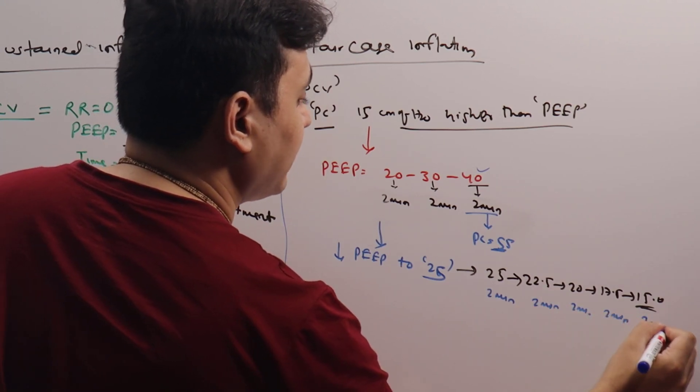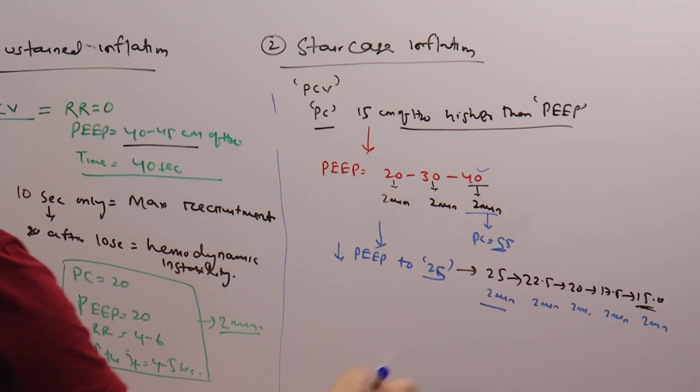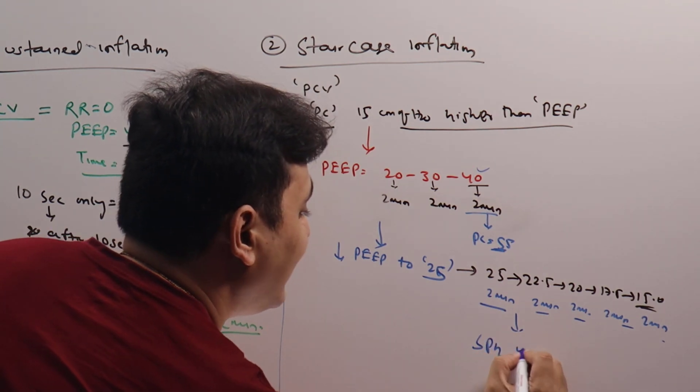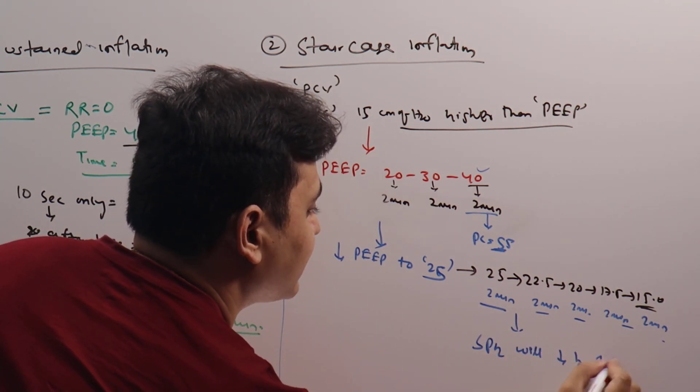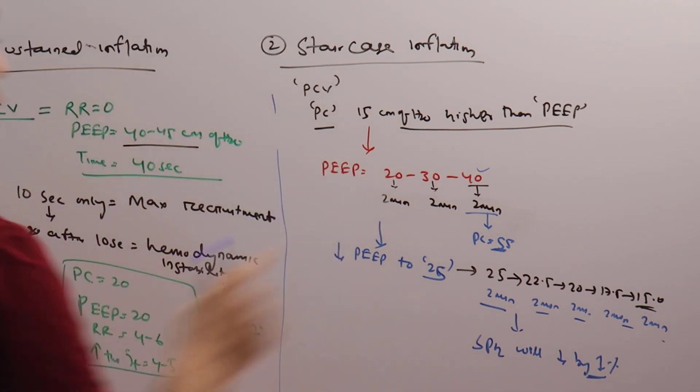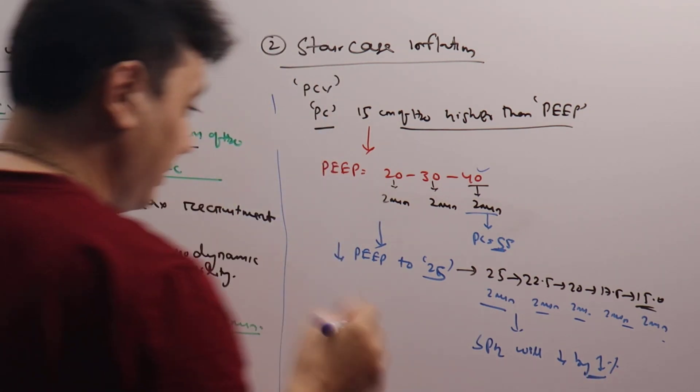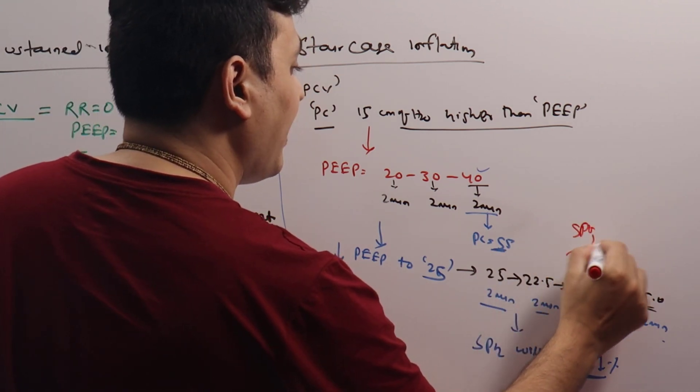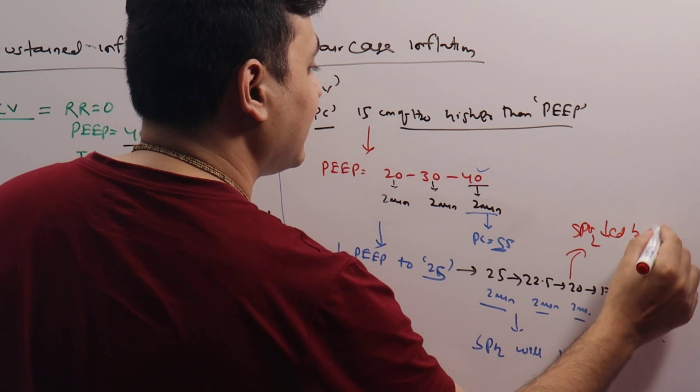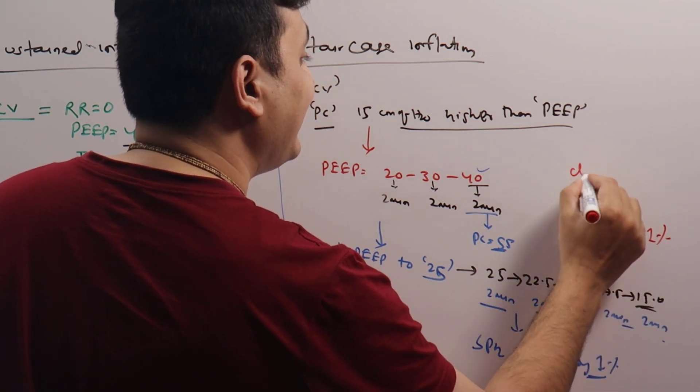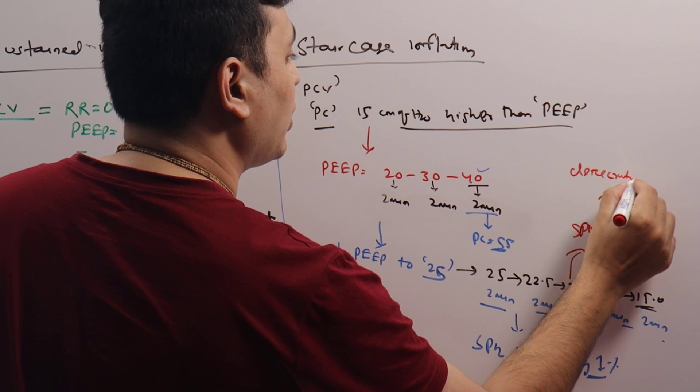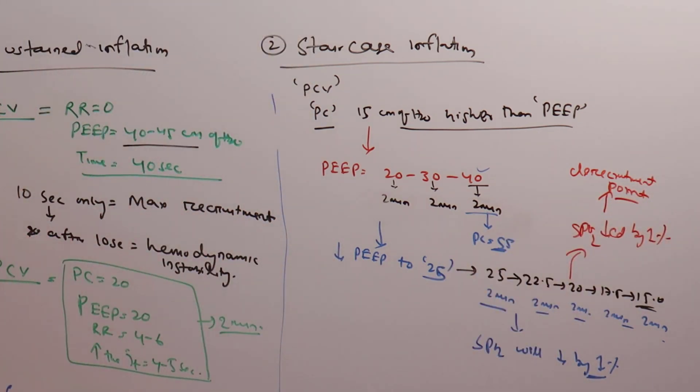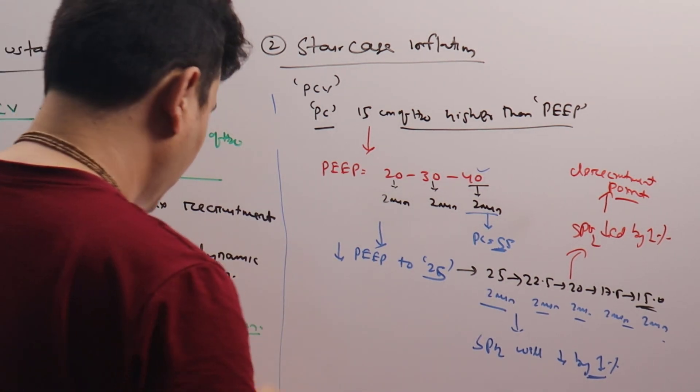We have to observe the saturation. While we are decreasing the PEEP, there will be a point when the SpO2 will decrease by 1%. That will be the point of derecruitment. For example, in our case at 20, the SpO2 decreased by 1%. So this will be called the derecruitment point.